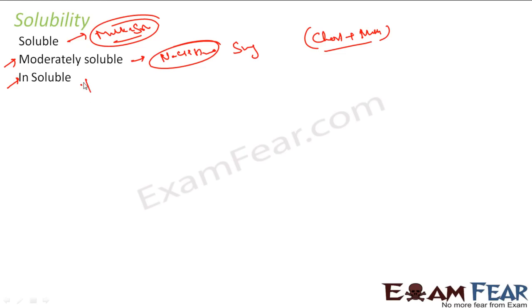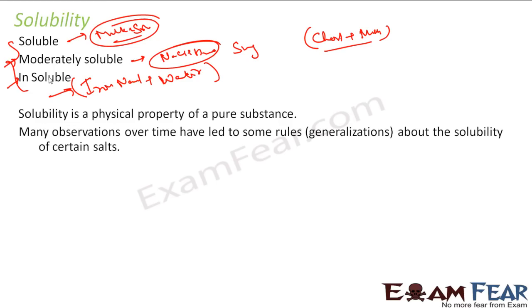Insoluble means it won't even mix. For example, you take iron nails and try to mix with water—it won't even mix. Those things are insoluble. These are nothing but the property of the substance. Solubility is the physical property of the substance and depends on how it is structured, which you'll study in later classes.